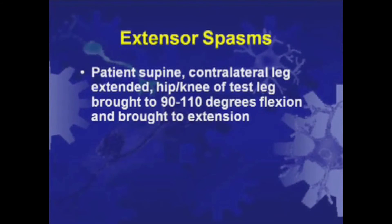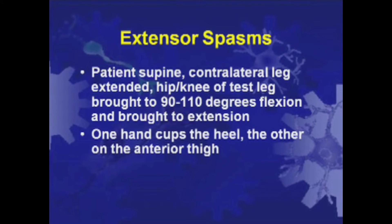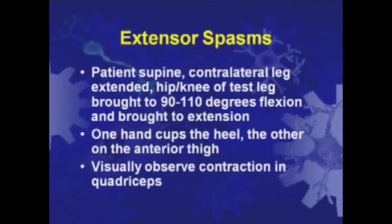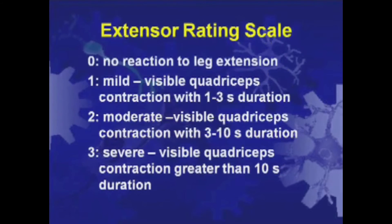Extensor spasms are triggered using an imposed extension movement of the leg. With the contralateral limb extended, the tested knee and hip are positioned at flexion angles of approximately 90 to 110 degrees, and then both joints are simultaneously extended. Once a visible muscle contraction in the quadriceps is seen, the duration of the contraction is measured by observing the displacement of the patella. Based on the duration of contraction, a score between 0 and 3 is assigned: 0 is no reaction; 1 is contraction maintained less than 3 seconds; 2 is contraction persisting between 3 and 10 seconds; and 3 is contraction persisting for more than 10 seconds.